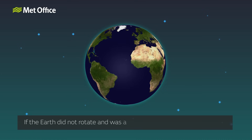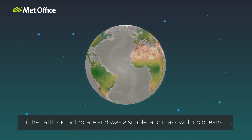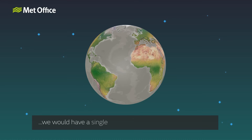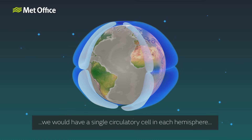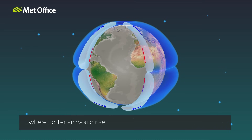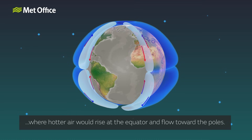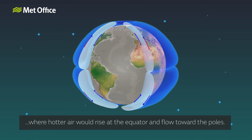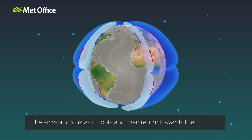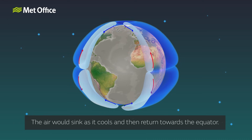If the Earth did not rotate and was a simple land mass with no oceans, we would have a single circulatory cell in each hemisphere, where hotter air would rise at the equator and flow toward the poles. The air would sink as it cools and then return towards the equator.